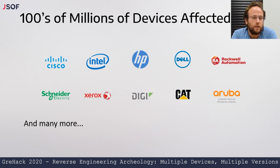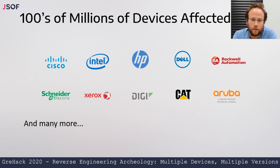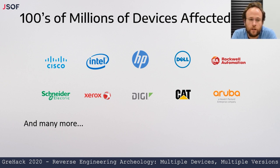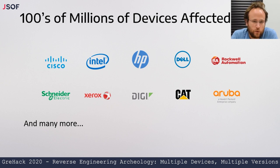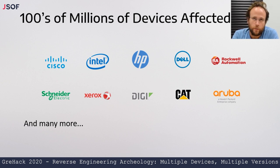The devices affected are made by companies you all know — small companies, large companies. This is a sample of some of the better-known Western companies. There's also a whole Japanese branch of the Trek stack found in a bunch of Asian companies, and many more companies beyond that. In total, we reached out to over 100 companies. Thirty-something confirmed their devices are indeed vulnerable to Ripple 20, while a lot of companies didn't reply at all, and many also said they're not vulnerable.